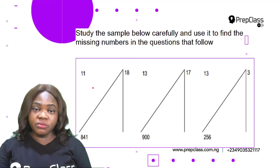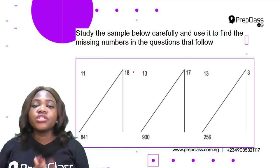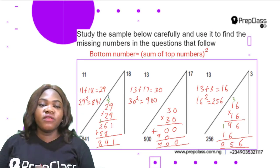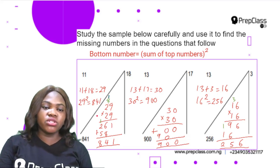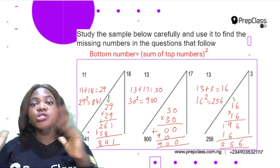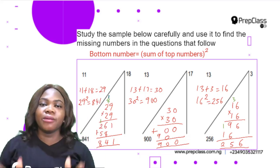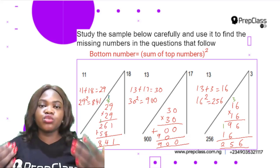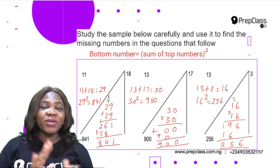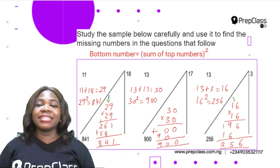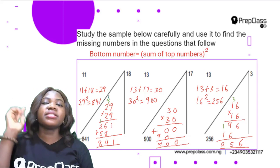There are three numbers in each sample and there is a relationship between them. For this set of samples, all you have to do is find the square of the sum of the top numbers to get the bottom number. Add the two top numbers, then square the result — the square of a number is the value obtained when the number is multiplied by itself. So add the two top numbers and multiply that sum by itself to get the bottom number.